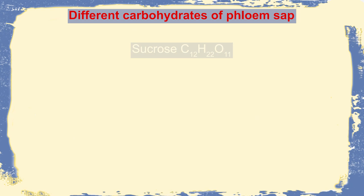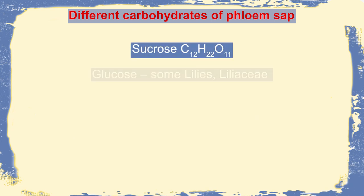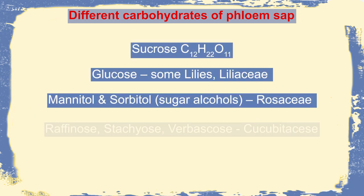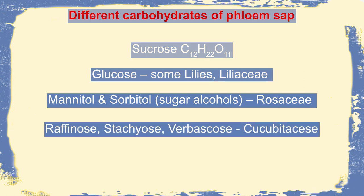Though sucrose is the most common form of sugar, there may be other forms of carbohydrate like glucose, mannitol, raffinose, tachyose, etc.